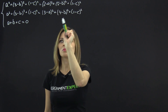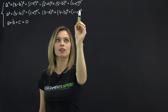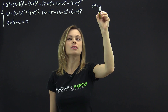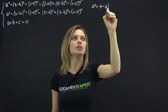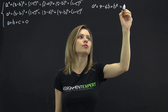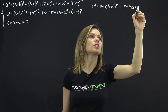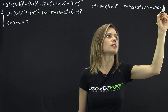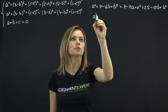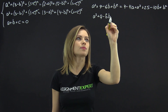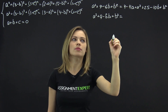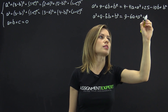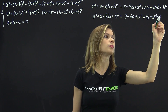First of all, the (1 minus c) squared terms can be cancelled out. Now let's open the parentheses: a squared plus 9 minus 6b plus b squared equals 4 minus 4a plus a squared plus 25 minus 10b plus b squared. Then a squared plus 9 minus 6b plus b squared equals a squared plus 16 minus 4a minus 10b plus b squared.